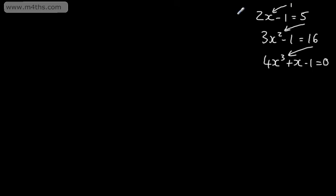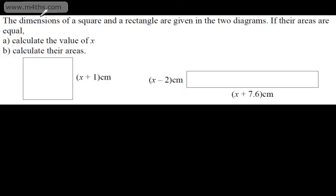We're going to look at some wordy questions, set up equations, and solve them given certain information. In this one, it says the dimensions of a square and a rectangle are given in the two diagrams. If the areas are equal, calculate the value of x, and calculate the areas. So we've got a square with sides x plus 1, and a rectangle with dimensions x minus 2 and x plus 7.6.